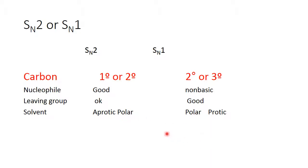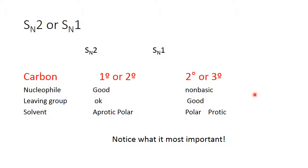When we look at reaction conditions, the first thing we do is consider the carbon. Is the substrate primary or secondary, or tertiary? If it's primary, we know it's going to have to go SN2. If it's tertiary, we know it has to go SN1. The real question is when it's secondary — then you start looking at the other factors. You look at the solvent: is it polar aprotic? Probably SN2 will occur. Is it polar protic? Then probably SN1 will occur.